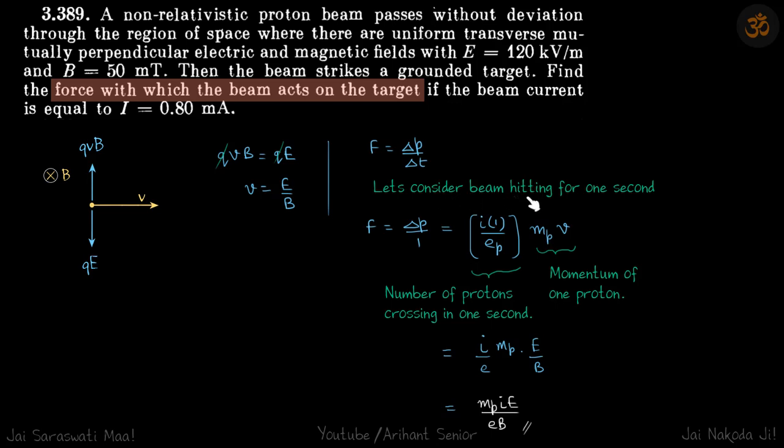Let's consider the beam hitting for one second, so delta T becomes one. In one second, we need to find the total momentum of the beam, and we divide that by one. Total momentum equals momentum of one proton times the number of protons crossing in one second.